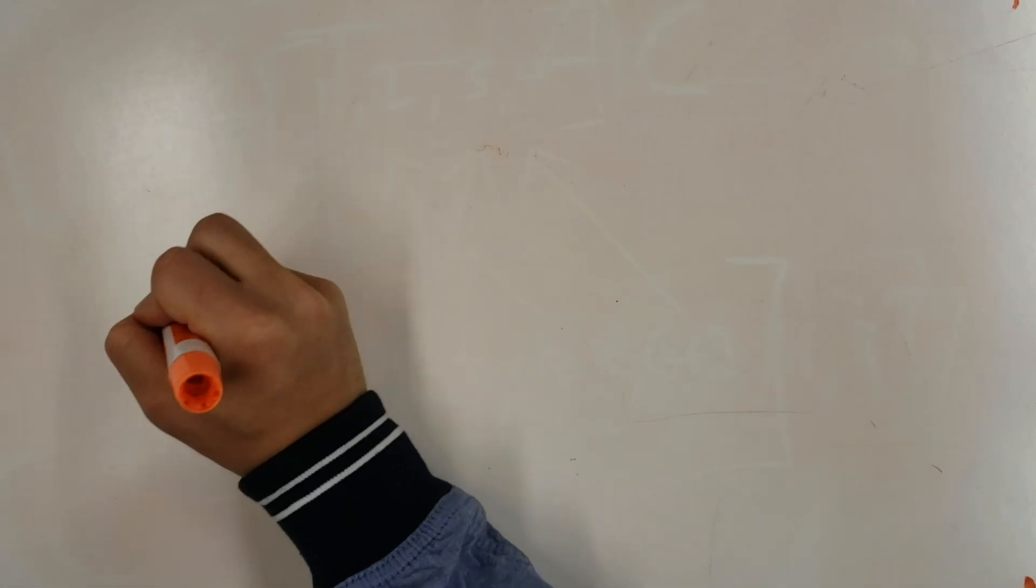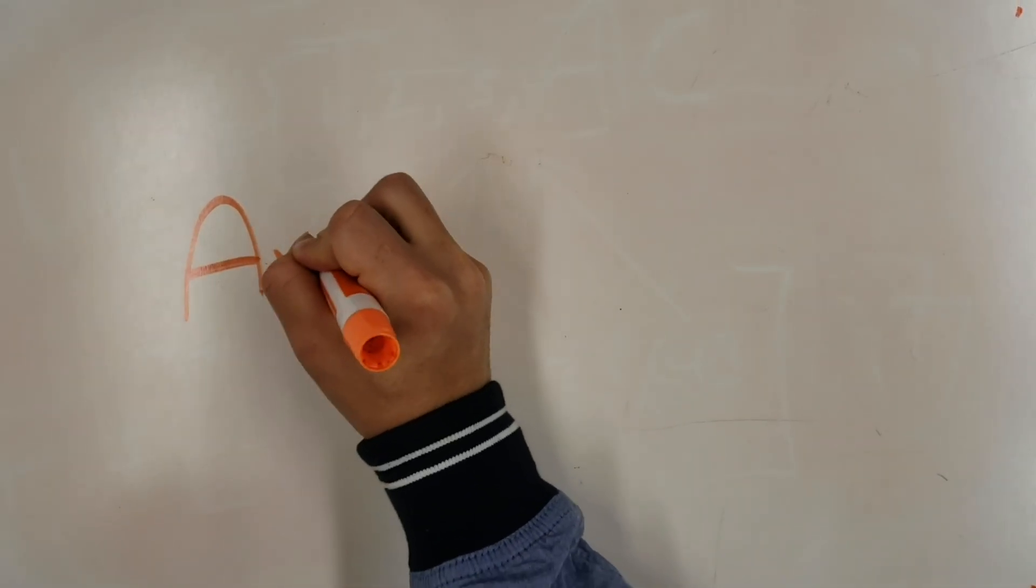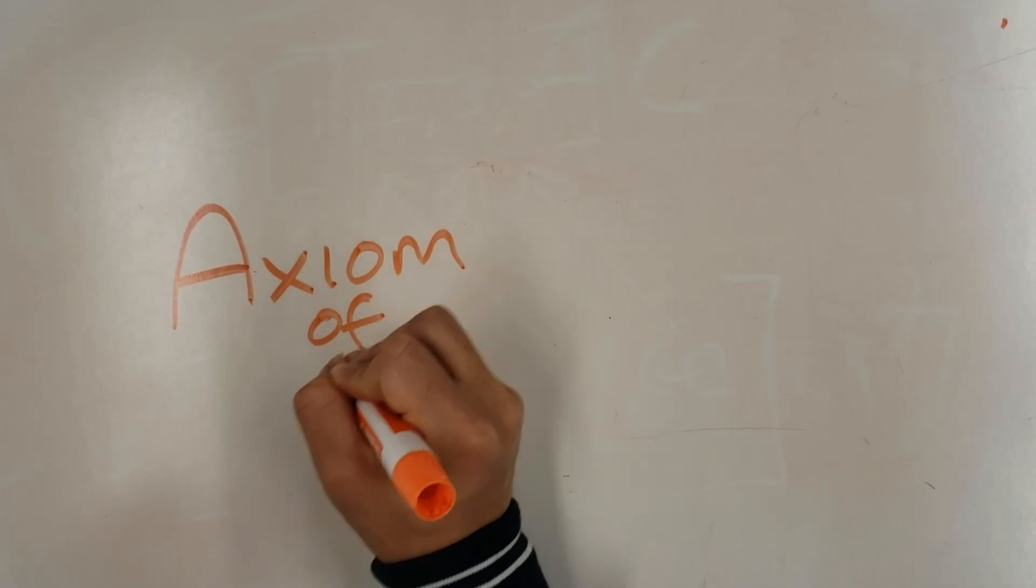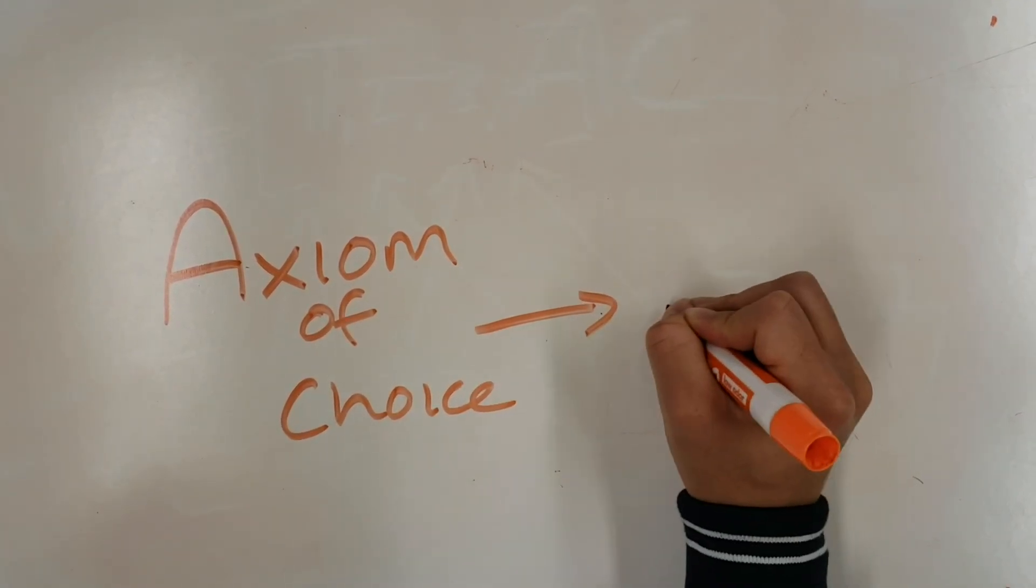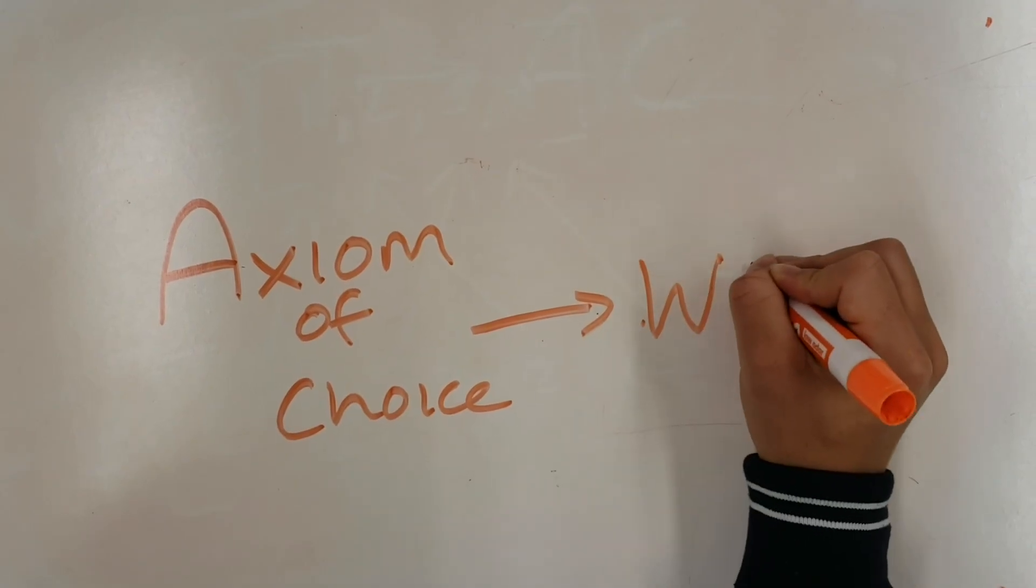Next let's see why the axiom of choice implies the well-ordering theorem. A full proof is beyond the scope of this video, but the intuition behind it is simple.